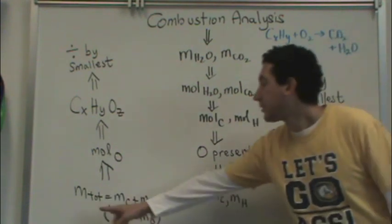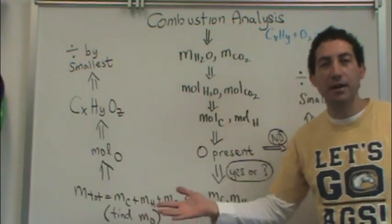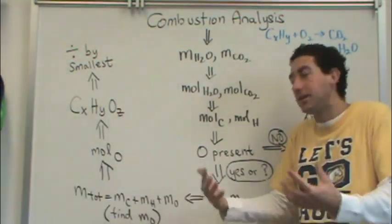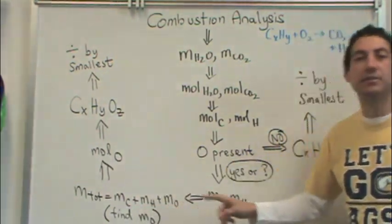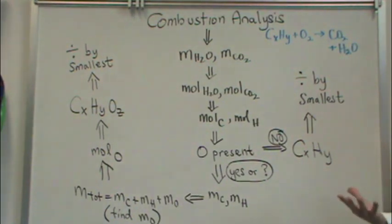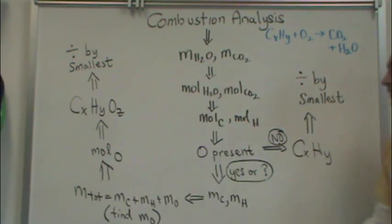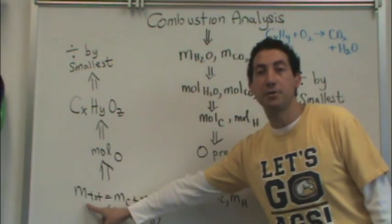What does that mean? The total mass of the organic compound, or the unknown compound that you come upon on your crime scene, is equal to the sum of the masses of each element in it. So the mass of carbon plus the mass of hydrogen plus the mass of oxygen. In a typical problem, you're given this total mass.